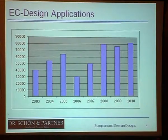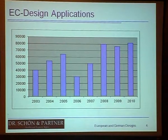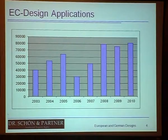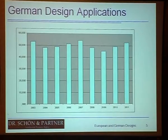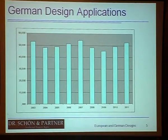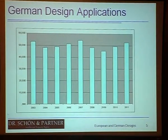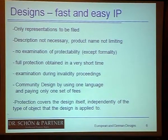Looking at the numbers: for European community designs, we have over 70,000 applications per year. For patents at the EPO, we have more than 200,000, so designs make up only one-third. German designs have a slightly smaller number, averaging 50,000 a year.